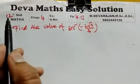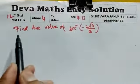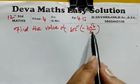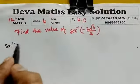Hi students, this is Deva. Now we are going to see Trigonometry chapter 4, example 4.13. Find the value of sec inverse of minus 2 root 3 by 3. The solution: